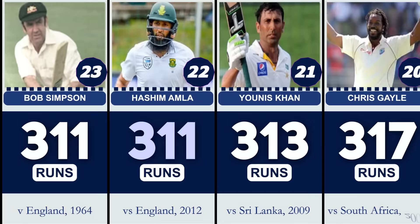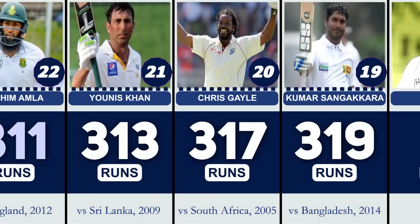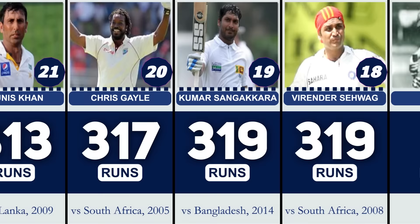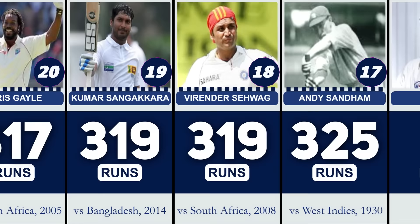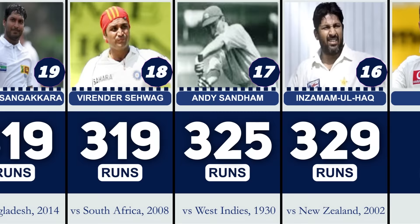Number 21: Yunus Khan, 313 vs. Sri Lanka. Number 20: Chris Gayle, 317 vs. South Africa. Number 19: Kumar Sangakara, 319 vs. Bangladesh. Number 18: Virendra Shebak, 319 vs. South Africa. Number 17: Andy Samham, 325 vs. West Indies. Number 16: Injamal Hawke, 329 vs. New Zealand.